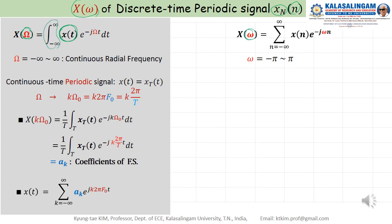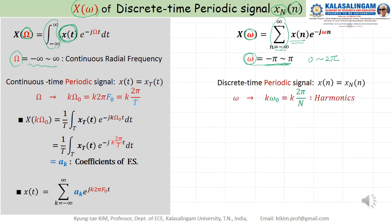Instead of an integral, we use a summation over n from minus infinity to infinity for discrete time signals. Omega ranges from minus pi to pi, or sometimes 2·pi. In the continuous case omega goes from minus pi to pi; in the discrete case, omega also ranges from minus pi to pi, because it is normalized by F_S. For discrete time periodic signals, instead of omega we use k times omega_0.